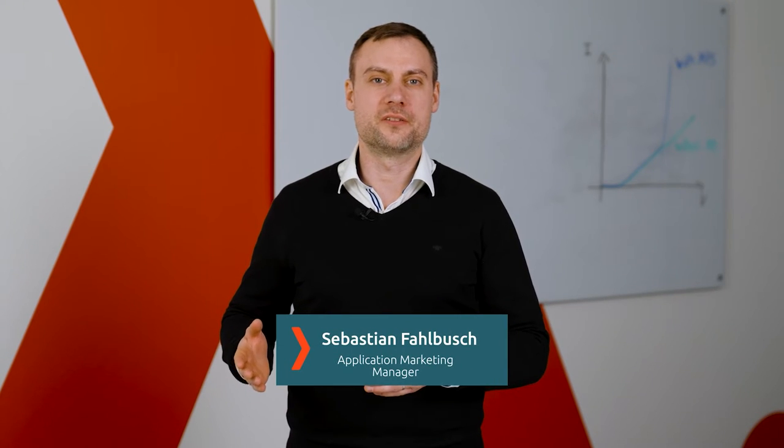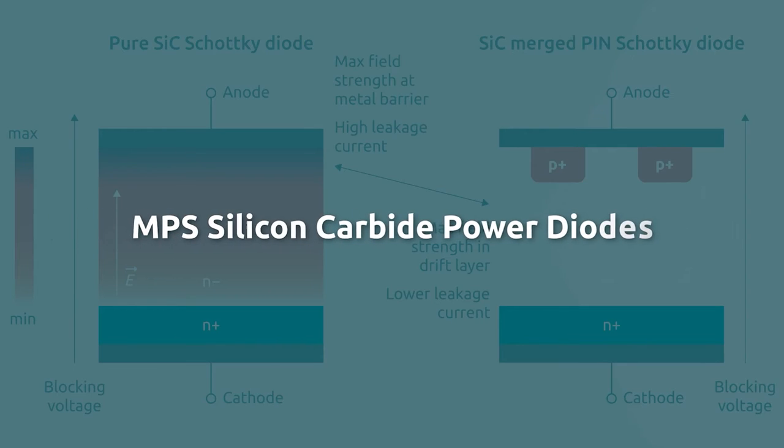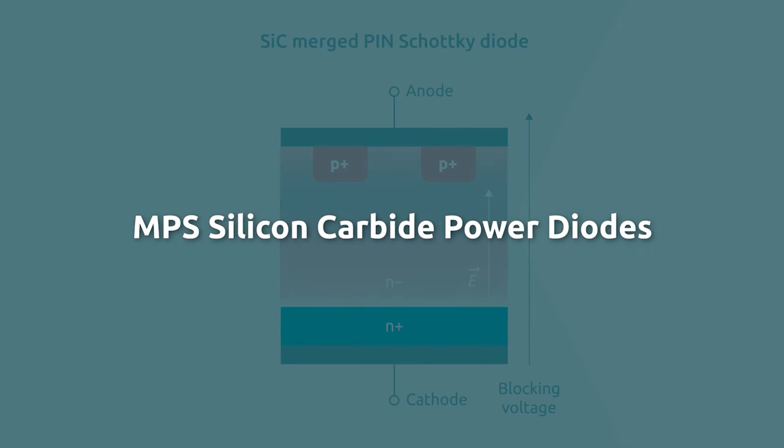What are MPS silicon carbide diodes and how do they differ from pure silicon carbide Schottky diodes? Although pure silicon carbide Schottky diodes have many advantages over silicon diodes, there are some characteristics of silicon carbide Schottky that can be improved to maximize their performance.